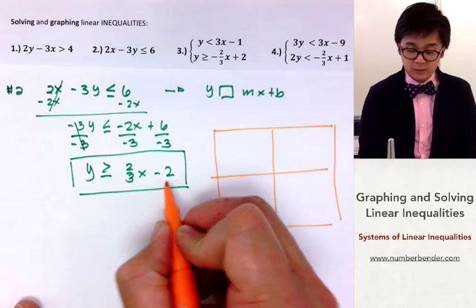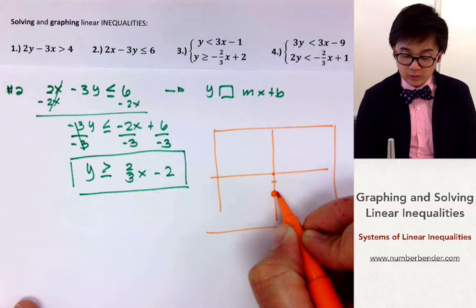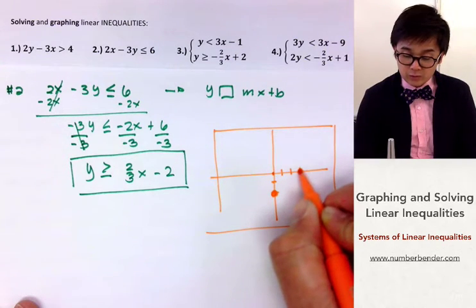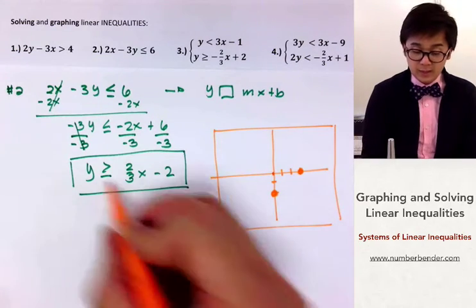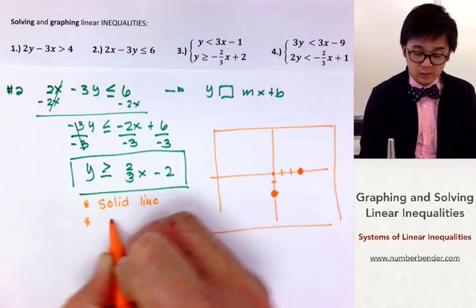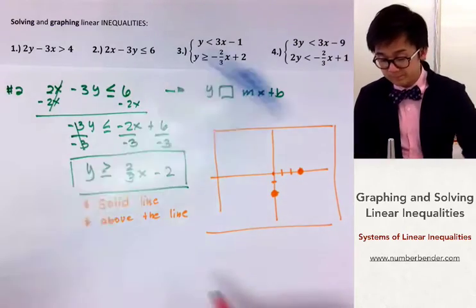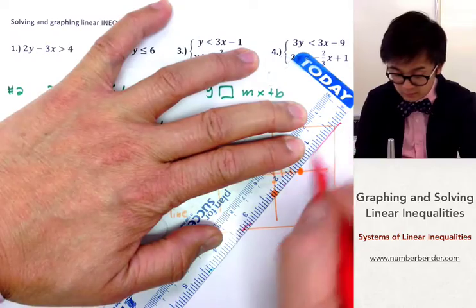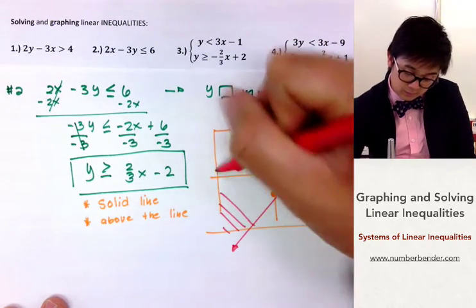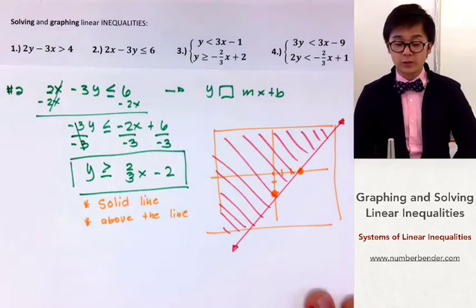We start at the y-intercept which is negative 2. Then we move 2 units up and 3 units across to the right — we always move to the right when graphing. Since this is a greater than or equal to symbol, we draw a solid line and shade above the line. This will be the region for problem number 2 — a solid line with shading above.